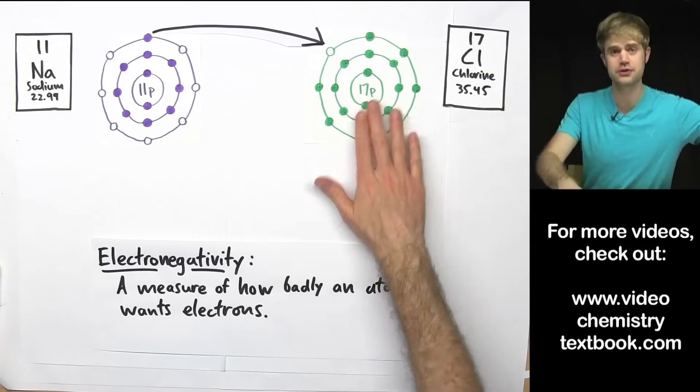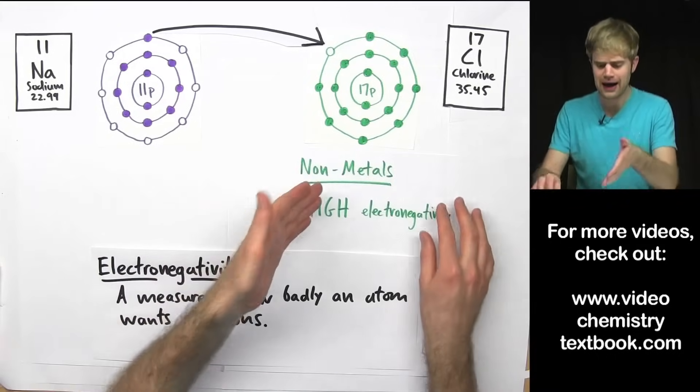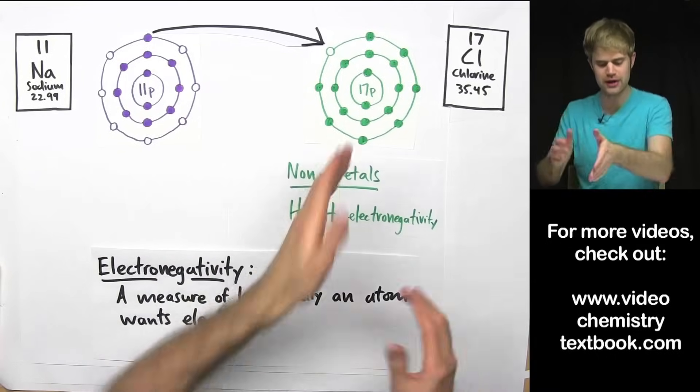So nonmetals like chlorine all have a very high electronegativity. They are very greedy. They want other electrons very badly.